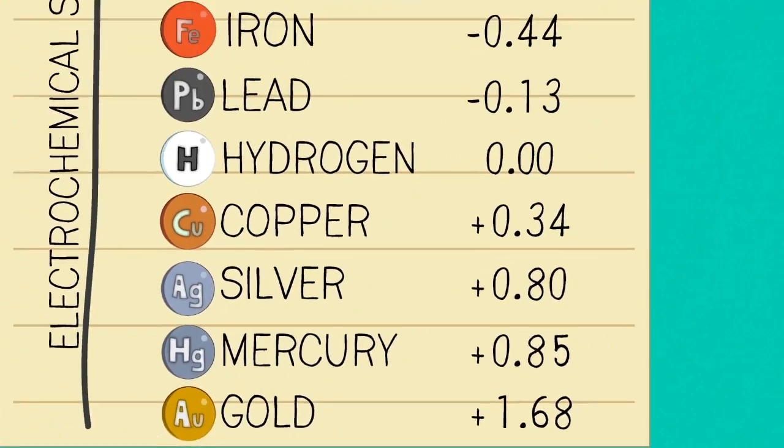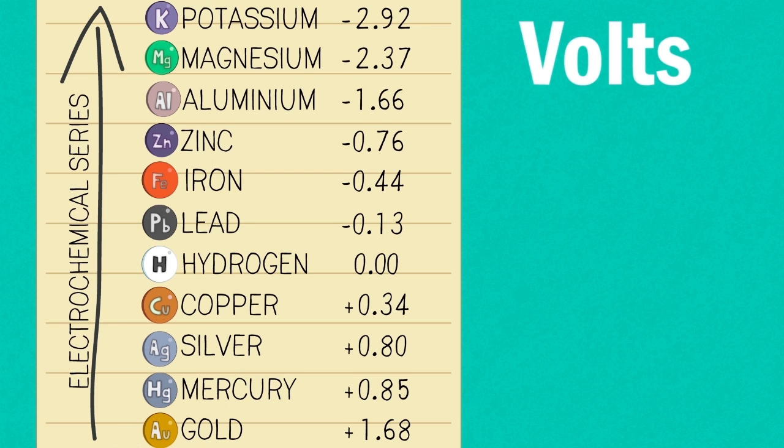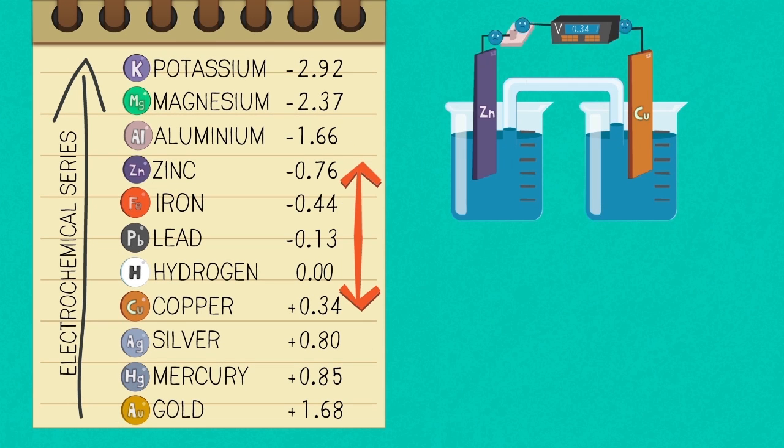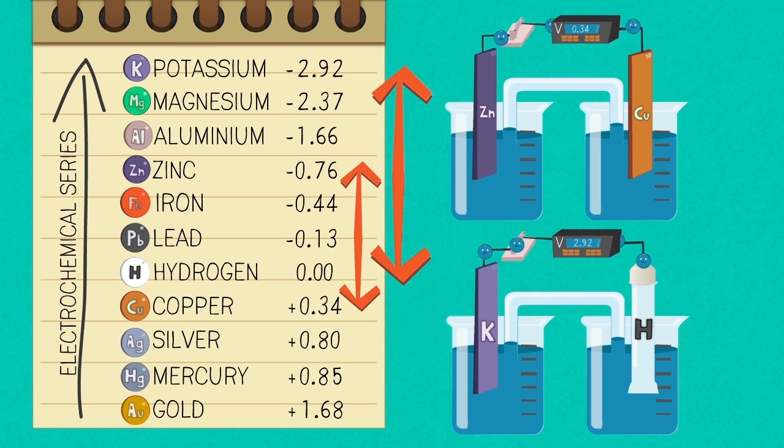In summary, the electrochemical series contains electrode potentials measured in volts which are compared to hydrogen. The greater the difference between the two substances in the electrochemical series, the more readily the electrons move from the more reactive metal (i.e., the more negative value) to the less reactive metal (i.e., the more positive value).